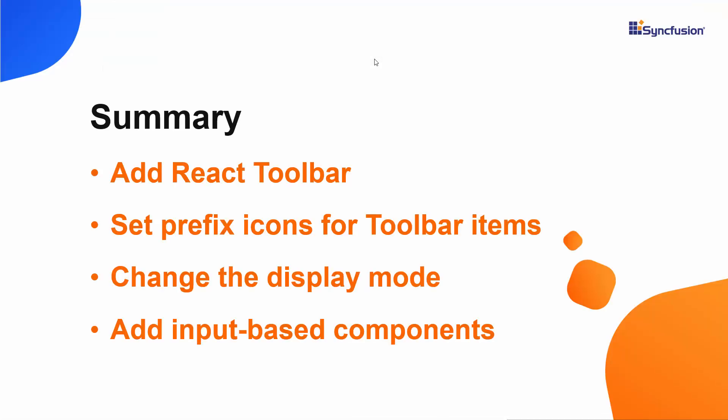Let's recap what we have done in this video. We saw how to create a React app and added the Syncfusion React Toolbar component to it. We saw how to set prefix icons, separators, and display modes for the toolbar component, and how to add input-based components like numeric text box and drop-down list to it. If you would like to see a working example, you can download one from the GitHub link shared in the description below. I have also included a link in the description where you can check if you qualify for our community license, which gives you a free license key for our entire React suite. If you found this video useful, don't forget to click the like button and subscribe to our channel to watch more videos like this. Thanks for watching.